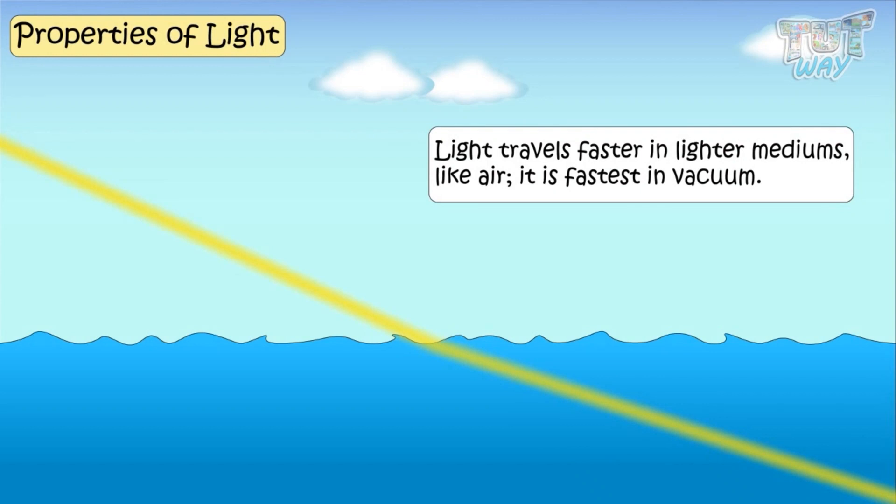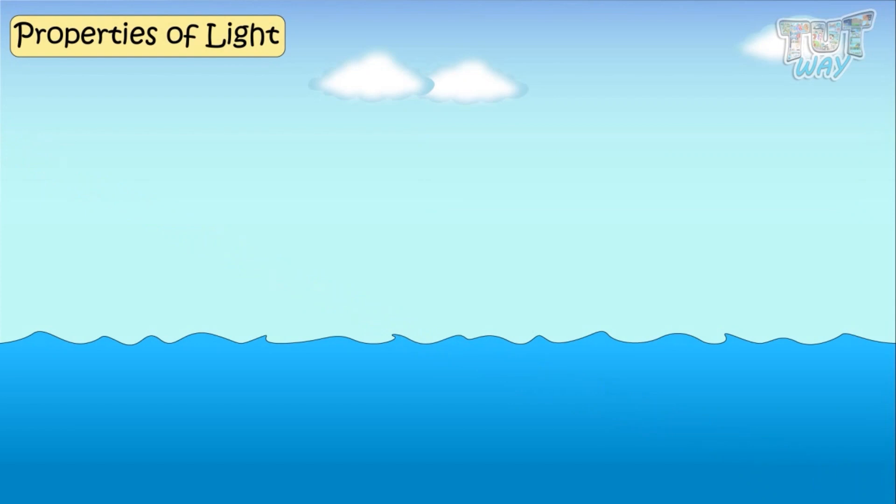And this is why speed and direction of light changes when it enters a denser medium to thinner medium, or thinner medium to denser medium, because the speed of light changes.